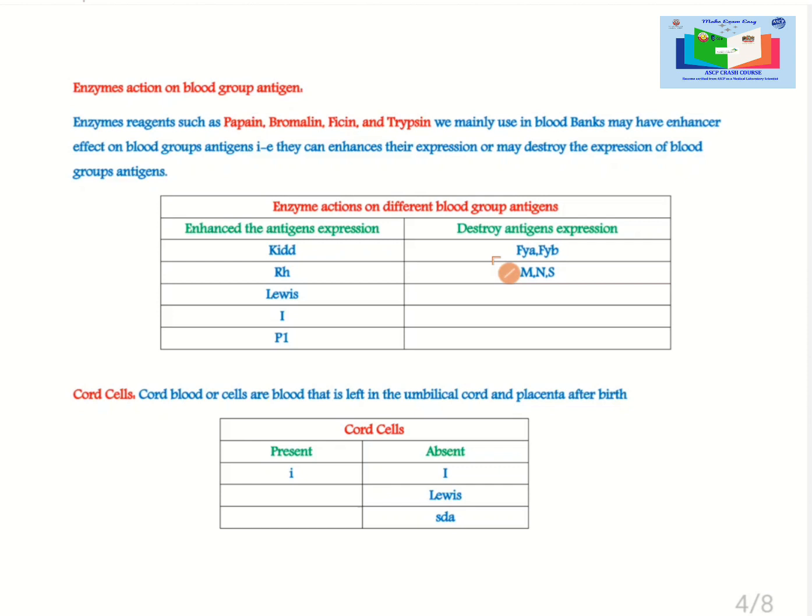Antigens of the Duffy group FYA, FYB, M, N, S are destroyed when we treat RBCs containing these antigens.